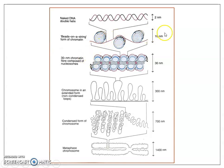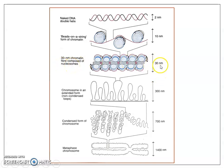The 10-nanometer fiber is further coiled to produce the 30-nanometer fiber. This 30-nanometer fiber has a solenoid structure, with 6 nucleosomes in every turn of the solenoid. The 30-nanometer fiber further gets organized into loops, supported by proteins. This is the first stage of the formation of a chromosome, with a thickness of 300 nanometers.